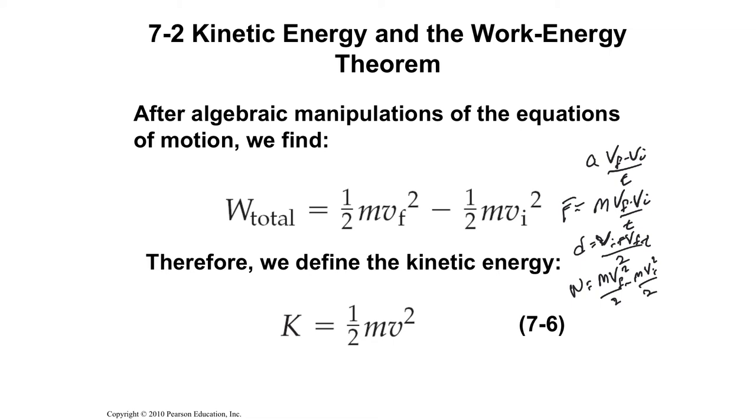Now, if your initial velocity is 0, then the whole second part can go away, and you can end up with 1 half MV squared. We'll see that that is kinetic energy. The kinetic energy, or the energy due to motion, is 1 half MV squared. It's still 1 half MV squared, but if it didn't start at 0, then you're going to have to take 1 half MV squared final, the final velocity, minus 1 half MV squared with a V as your initial velocity. And that's your total work.